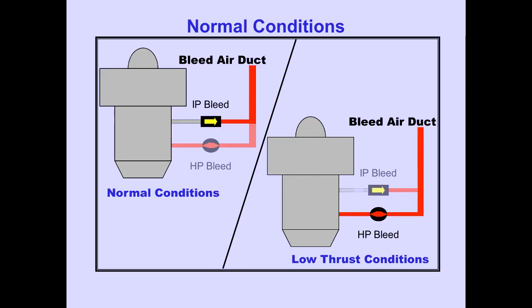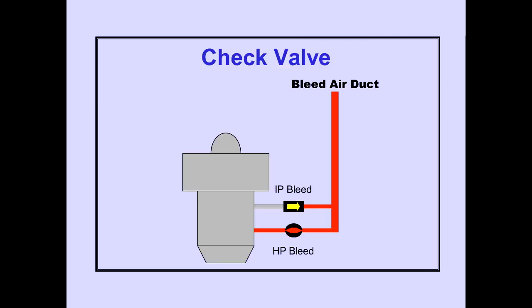During normal conditions, IP bleed is used to pressurize the bleed air duct. If IP bleed is not sufficient to meet bleed air requirements, such as during low thrust settings, HP bleed is used. A check valve in the IP bleed supply duct prevents backflow of air into the engine compressor section when the HP bleed valve is open.